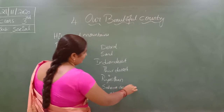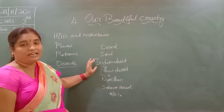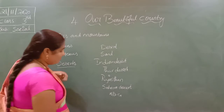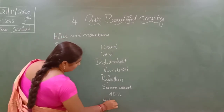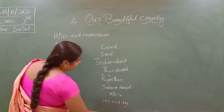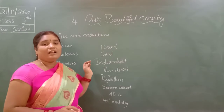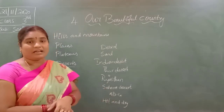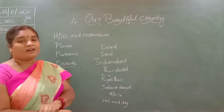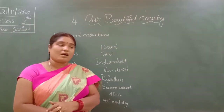In the desert, there is very little rainfall. The climate is hot and dry. The area gets very little rainfall, so crops cannot grow there.